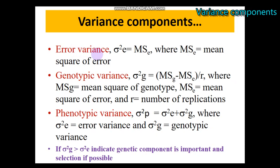Coming to the error variance, which is equal to the mean square error of our model — for example, if your model is RCBD, the mean square error will be the error variance, sometimes referred to as environmental variance. The genotypic variance is calculated from the difference between the mean square of the genotype and the mean square error, divided by the number of replications.